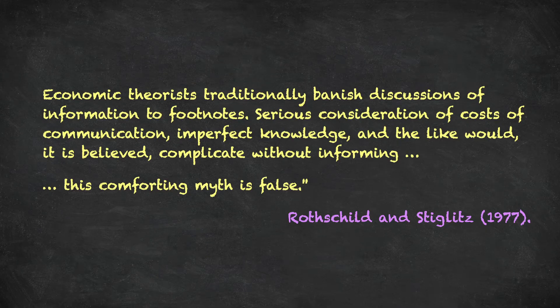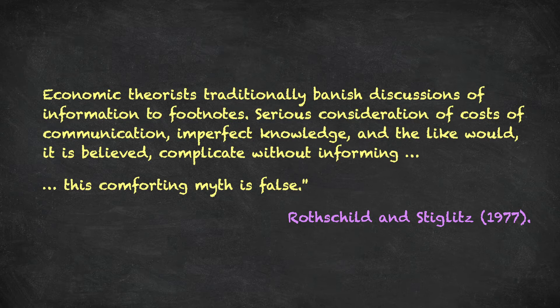Let's begin our lecture today with a quote from Rothschild and Stiglitz, 1977 — an absolutely brilliant quote. If you ever write a research paper in economics, beginning your paper with something that says everybody thinks one thing and they are wrong is just about the best way you can start a paper. So here is the quote: "Economic theorists traditionally banished discussions of information to footnotes. Serious consideration of costs of communication, imperfect knowledge, and the like would, it is believed, complicate without informing."